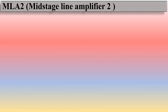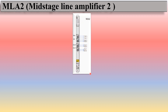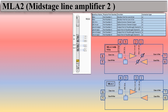Now moving to MLA2 — mid-stage line amplifier 2. The physical presentation is very similar to MLA. There are 8 ports: the first two ports belong to MON, the second pair belongs to OSC, the third pair belongs to Line B, and the fourth pair belongs to Line A. There are two variants: MLA2 and MLA2 with variable optical attenuator (VOA). The interface, physical port function, and connector type are very similar to MLA.